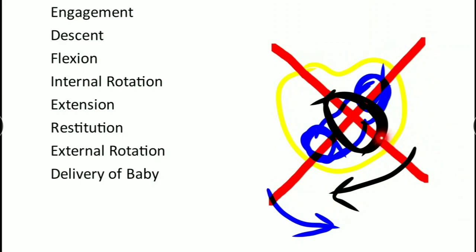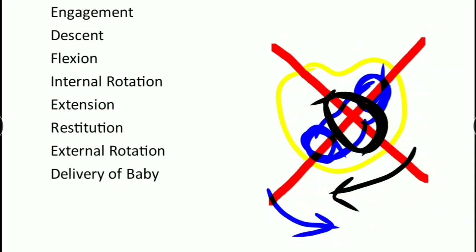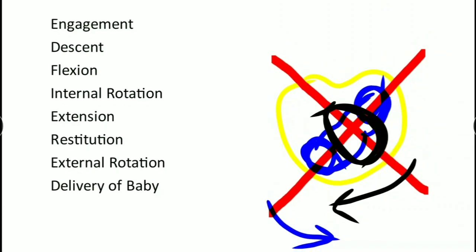After internal rotation, the head is delivered outside the body and undergoes restitution - coming back to normal position. Then the shoulder has to deliver, for which the shoulder undergoes internal rotation of one-eighth of the circle. Since the head is already outside the body, a corresponding rotation of the head occurs outside the body while the shoulder rotates inside the maternal pelvis.